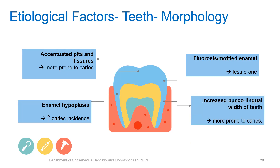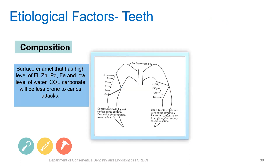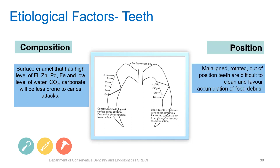Increased buccolingual width of teeth means there will be a tendency for dental plaque to accumulate under contact areas, making them more inaccessible to oral hygiene aids and therefore more prone to caries. Regarding composition, if there is a high concentration of fluoride, zinc, palladium, and iron, and low levels of water, carbon dioxide, and carbonate, the teeth will be less prone to caries as this favors resistance of enamel to acid dissolution. Regarding position, in malaligned, out-of-position, and rotated teeth, there is difficulty in maintaining oral hygiene, which favors accumulation of food debris and makes the teeth more prone to dental caries.